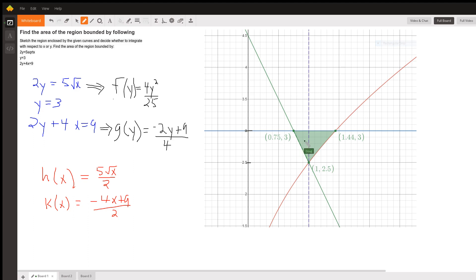In making your decision, you have to think about what your strategy is. If you want to integrate with respect to x, that means you're going to have little typical rectangles that look like this. And we'll have to go all the way from x equals 0.75 to x equals, I think that's 36 25ths, 1.44.